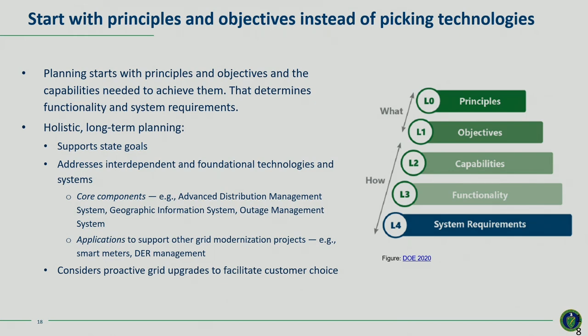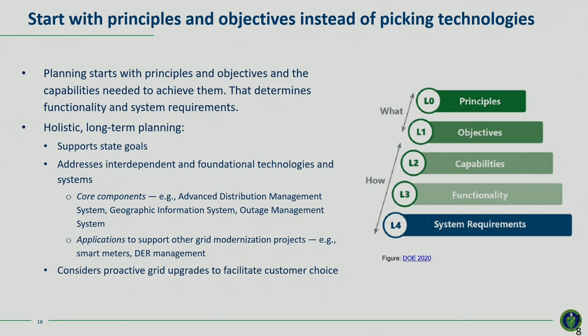Planning starts with principles, objectives, and the capabilities needed — that defines the functionality and system requirements. Technology choices should flow from that; you don't pick the technologies first. It's a more systematic approach. Planning should support state goals and address interdependent technologies — for example, you may need to install foundational systems like an advanced distribution management system before layering on other components. Some states are also underway with proactive grid upgrades to facilitate customer choice, including for solar and for demand flexibility.